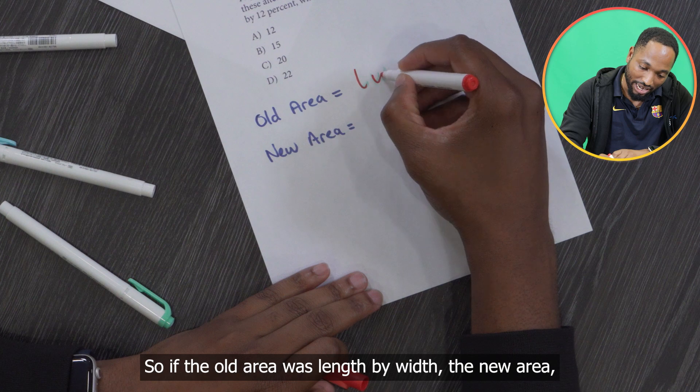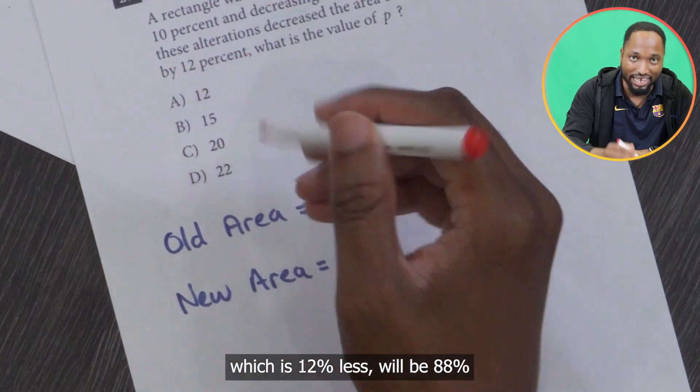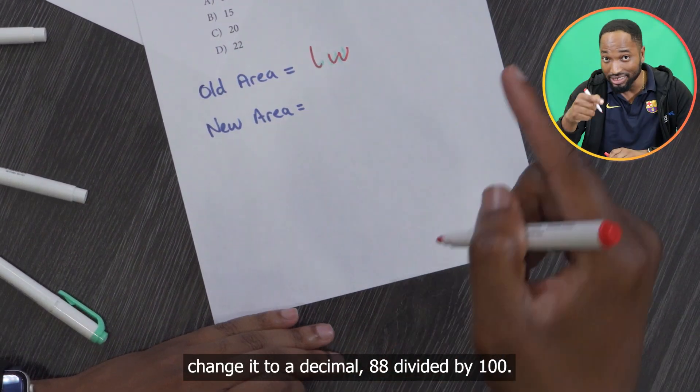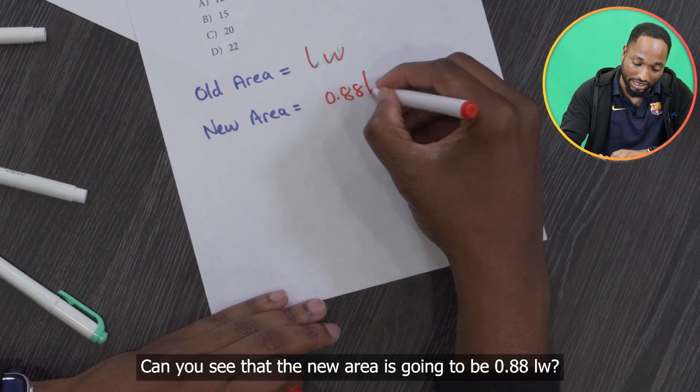So if the whole area was length by width, the new area which is 12% less will be 88% changed into a decimal, 88 divided by 100. Can you see that the new area is going to be 0.88LW?